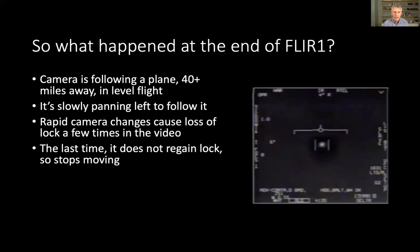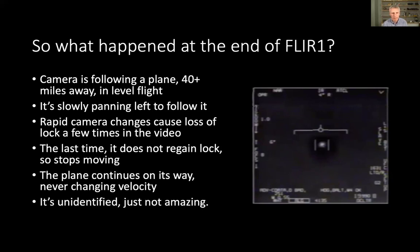What do I think happened at the end of this video? I think that the camera was following a plane, probably about 40 miles away. It's in level flight. It's not doing anything special. The camera is slowly panning to the left because it wants to follow the plane. The plane is just kind of moving off in that general direction. It's moving very slowly, nothing special. But then there's all these rapid camera changes. The camera flips between different modes. It flips between different magnifications. And at some point, it actually loses lock on the object. And it does this a couple of times through the video. It loses lock. You can see these bars widen and then it regains the lock on the object and carries on. But the last time, it just doesn't manage it. Couldn't quite manage with all these rapid camera changes. And so it stops tracking and the object just goes off to the side of the screen. And that's all that happened. It doesn't seem like it's really that complicated. And yet I have to fight to get this explanation across because people prefer the other explanation. The plane, I think, is just in level flight, not changing its velocity. And it's not amazing.